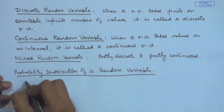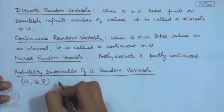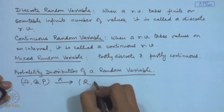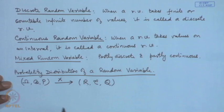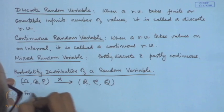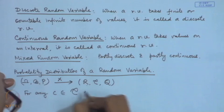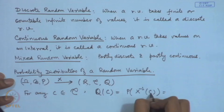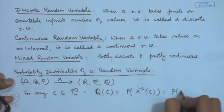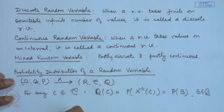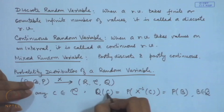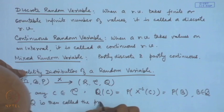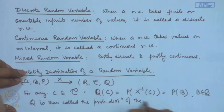If we have (Ω, B, P) as a probability space and X is a random variable defined on this, then X transforms this probability space to another probability space — call it (ℝ, C, Q). For any C in C, we associate Q(C) where Q(C) is the probability of X⁻¹(C). This X⁻¹(C) will be a set in B, so we are able to allocate its probability. Q is then called the probability distribution of the random variable X.